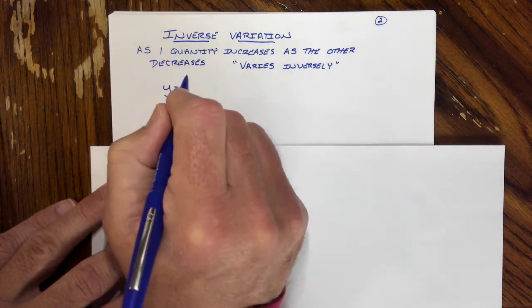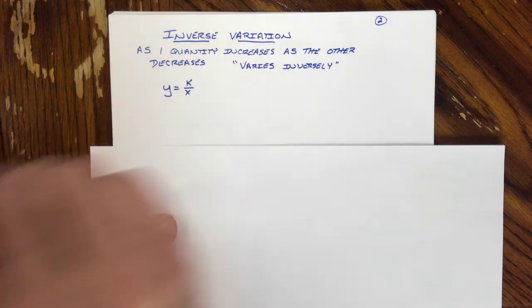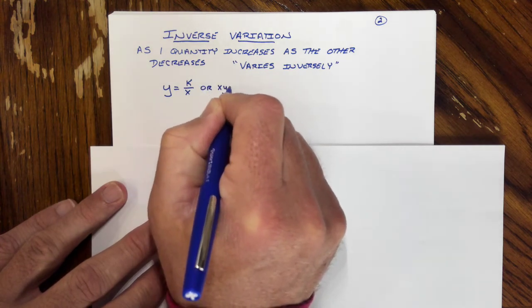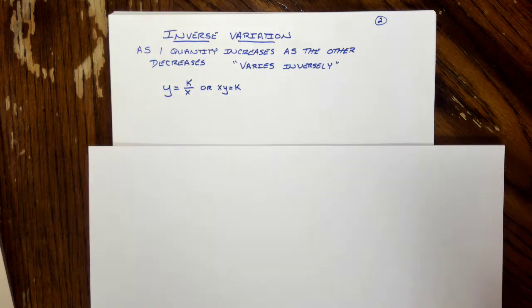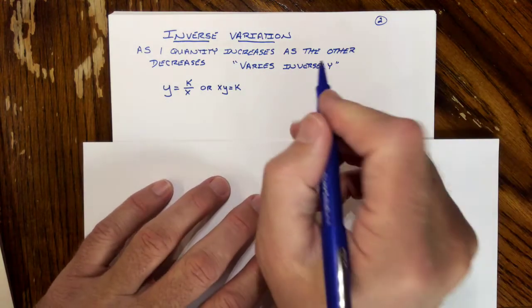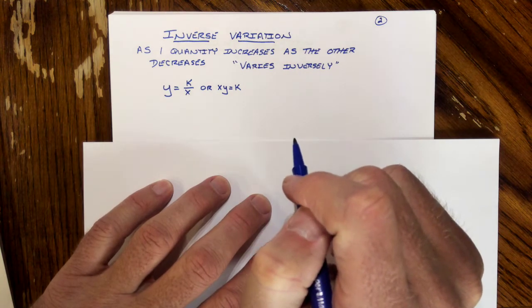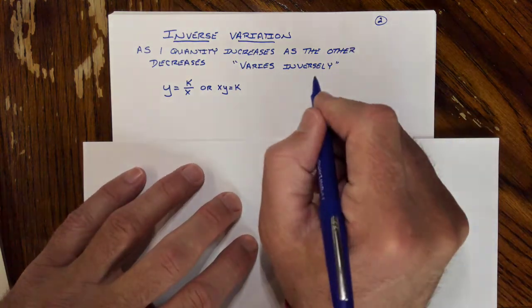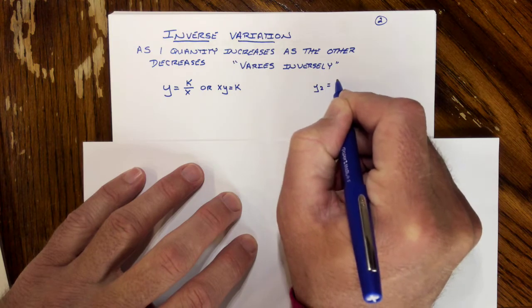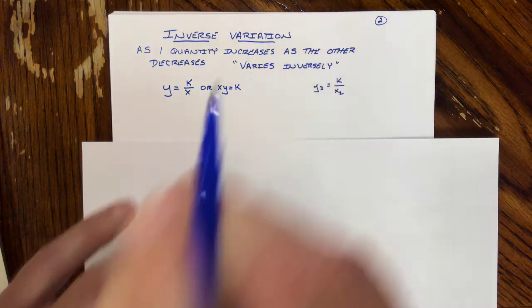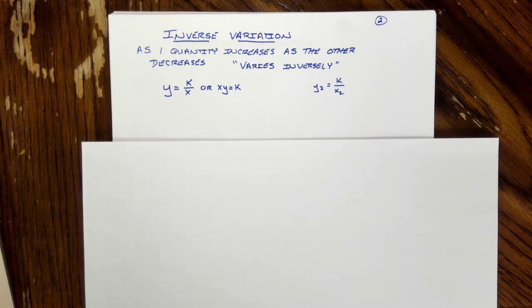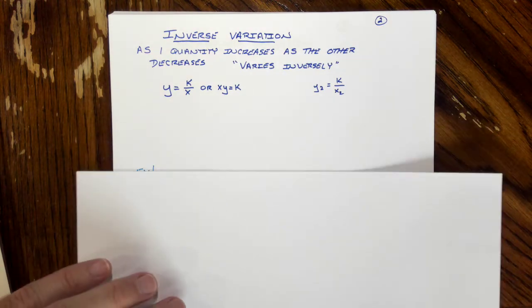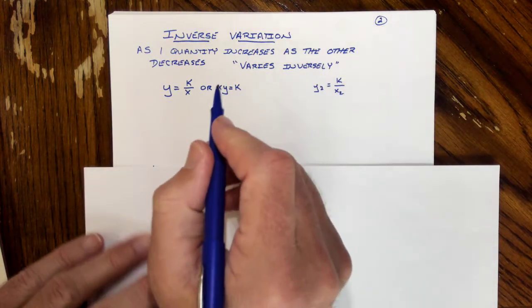Here's our general formula: Y equals K over X. Not going to be linear, as we can see. Or X times Y is equal to K. Again, not linear. Well, look what we got over here. As we do this, you can set up your Y sub 2 equals K over X sub 2, as well, when we're doing these things. So as we set these up, our formula that we're going to come into is going to look like this.